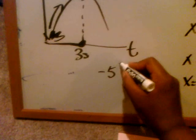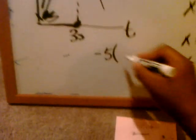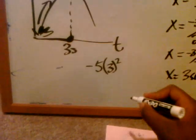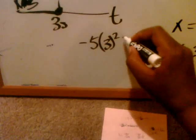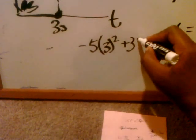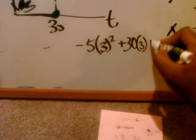We're going to have 5—I'm sorry, negative 5—times our x value, which is 3, and that's going to be squared, plus 30 times the 3, plus 2.